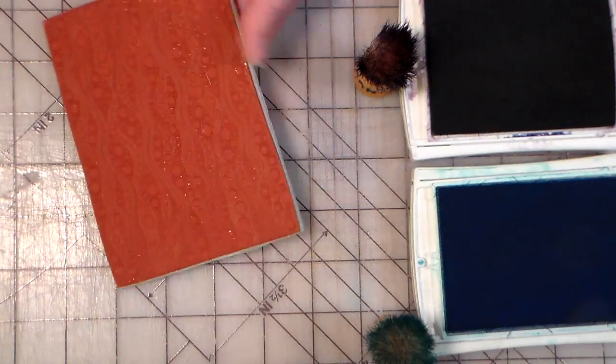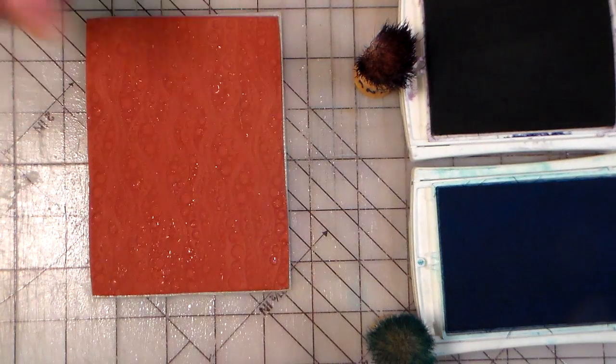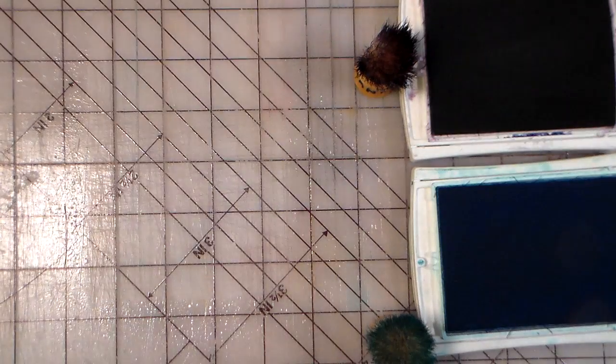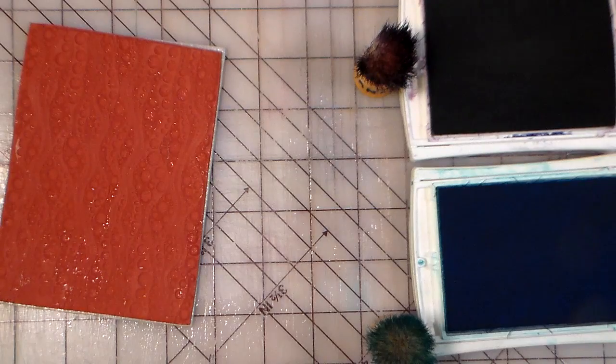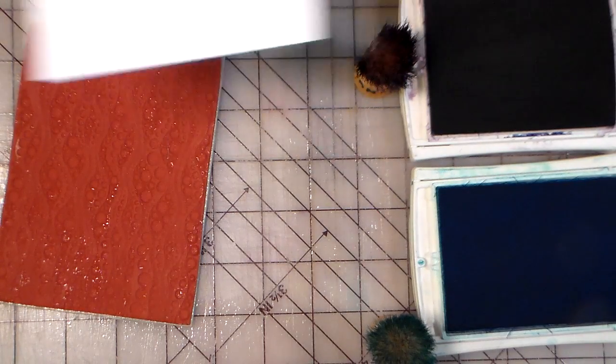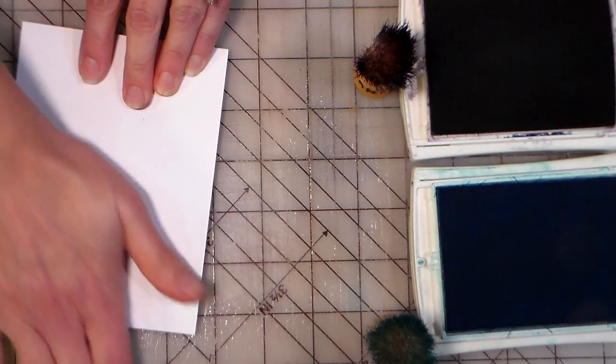First thing we're gonna do is take a rubber stamp and spray it with clean water. Then I like to shake it, get off any of the extra droplets, and then we're gonna put a piece of white cardstock on top and stamp just like it was ink.